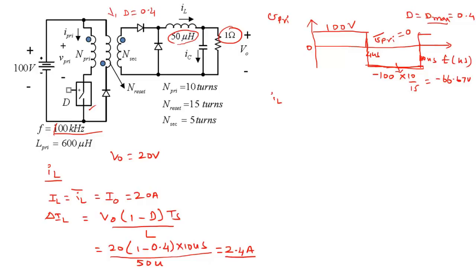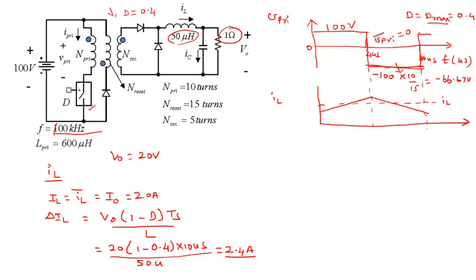The I_L waveform has a rising slope during the 4 µs on-interval and a falling slope during the off-interval. The average is 20 A, the peak is 20 + 1.2 = 21.2 A, and the minimum is 20 − 1.2 = 18.8 A, giving a total peak-to-peak ripple ΔI_L of 2.4 A.